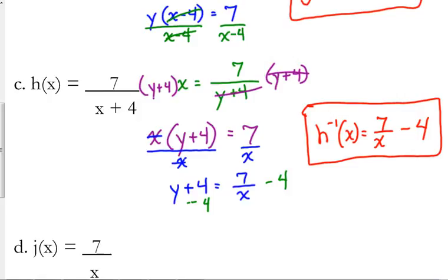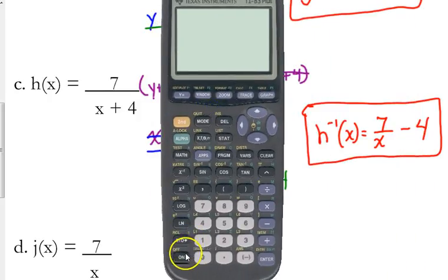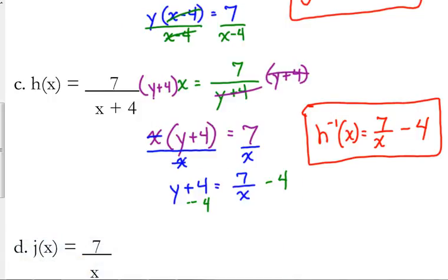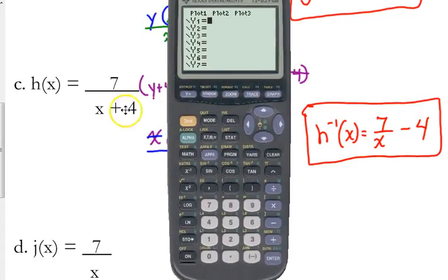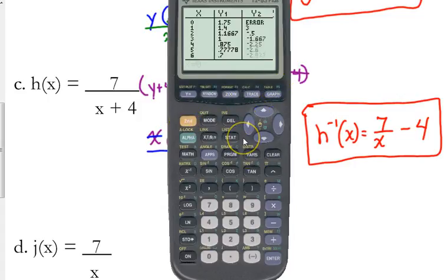Now let me give you just a little peek at how you can check this in your calculator. Let's try by putting the original equation in y1: 7 over, we have to put x plus 4 in parentheses. Put your inverse in y2. You don't have to put the 7 over x in parentheses but it can't hurt. 7 over x minus 4. And I'm going to go to the table. Now I'm not expecting the y values to be the same here.